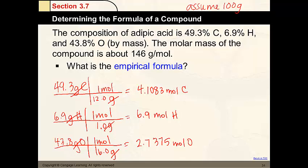These are not whole numbers. So we're going to divide each of them by the smallest value. And the smallest value is 2.7375. Of course, this is going to give us 1 oxygen.